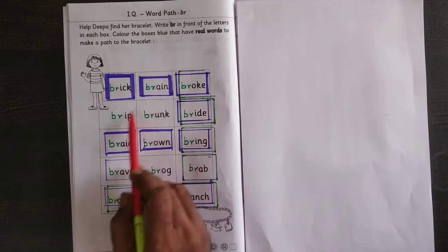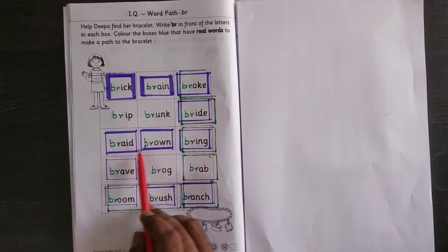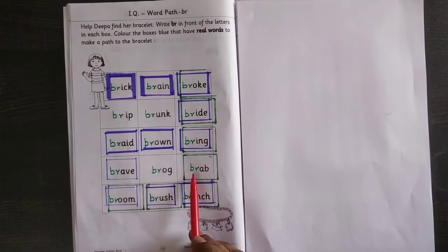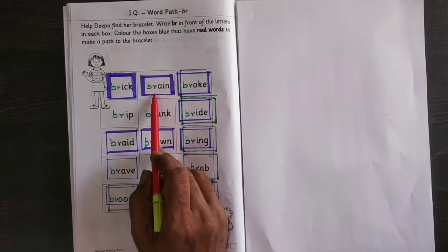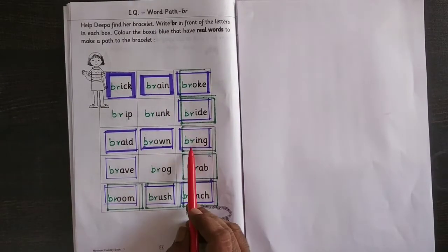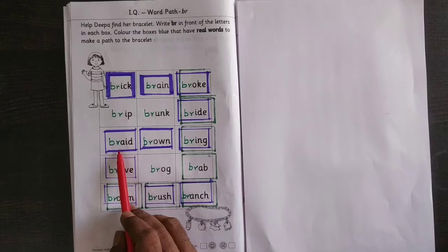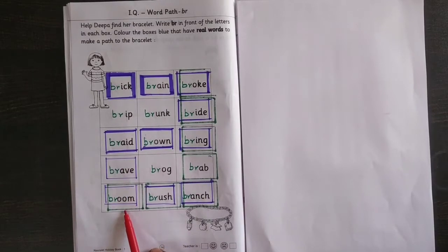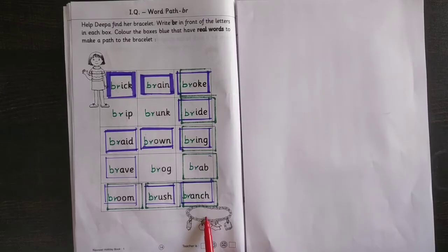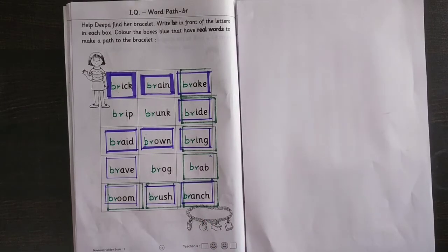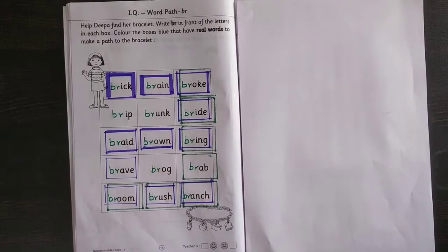You have to write BR in front of the given letters, and these are the meaningful words: brick, brain, broke, bright, bring, brown, braid, brave, broom, brush, and branch. And your bracelet is there. Understood? And these boxes you have to color with blue.